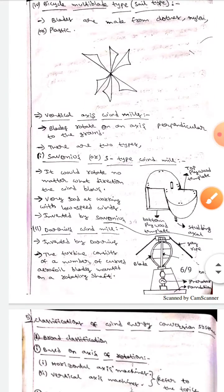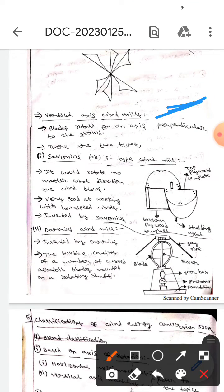The next one is vertical axis windmills. Here blades rotate on an axis perpendicular to the ground. There are two types. The first one is Savonius or S type windmill.